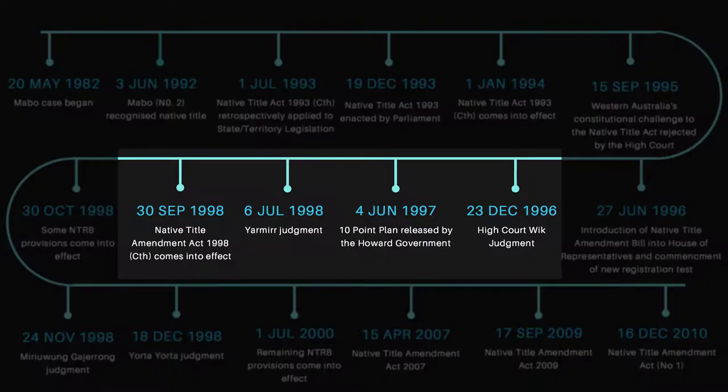In 1998, the Native Title Amendment Act, known as the Ten Point Plan, was introduced by the Howard Government in response to the Wik decision in the High Court. This plan led to the longest debate in the Australian Senate's history.